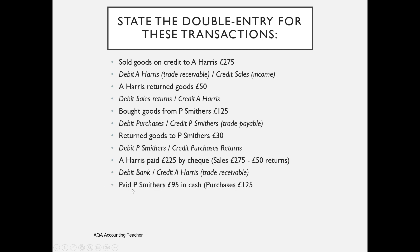When we pay P Smithers, we pay £95 in cash — because we bought goods costing £125 but returned goods valued at £30, so £125 minus £30 equals £95 owed to P Smithers. We debit the P Smithers account to reduce the liability and credit cash. That's how you deal with returns inwards and returns outwards.